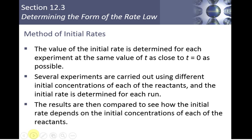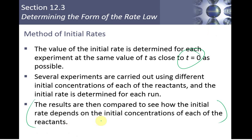In terms of the method of initial rates, the value of the initial rate is determined as close to time zero as possible, limited by your equipment and how quickly things happen. You use different initial concentrations, calculate the initial rate for each, and get a table of data. You then use that table to determine the order of the reaction with respect to each reactant.